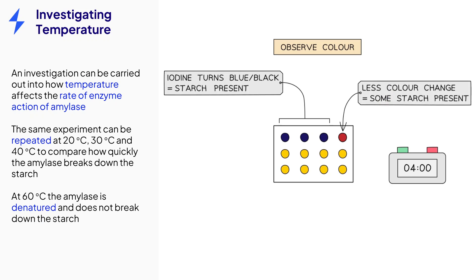Eventually, when the quantity of starch goes down, there may be slightly less color change by the iodine. Once all the starch has been broken down, the iodine will remain orange. Here you can see that it took 5 minutes at 30 degrees Celsius.